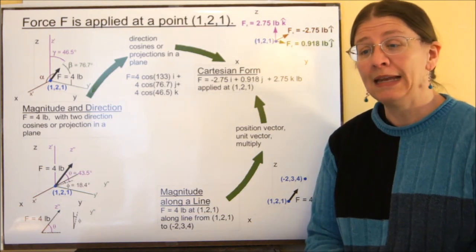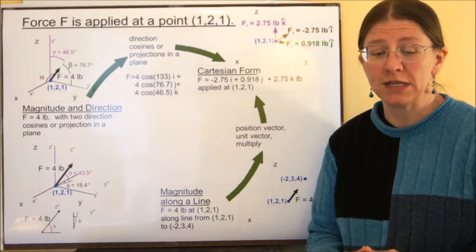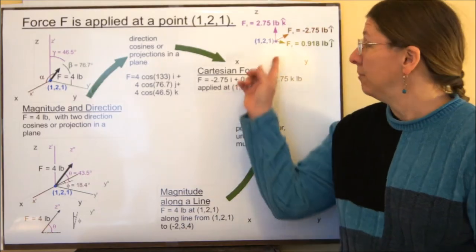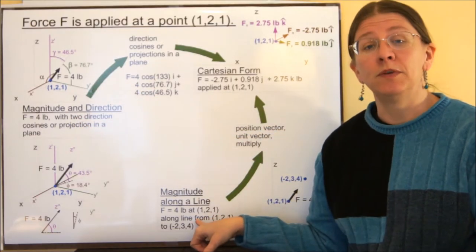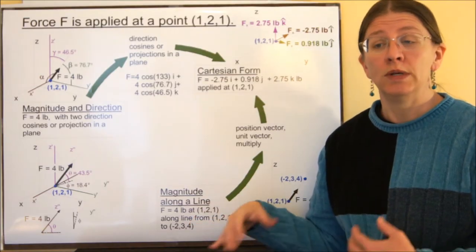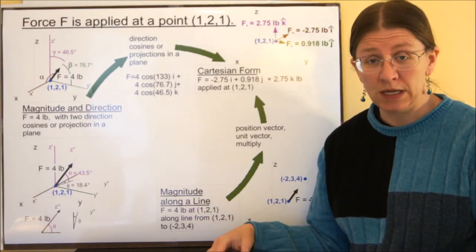We've seen before that any vector can be represented in any of three ways. It can be in Cartesian form, it can be in magnitude and direction, or it can be defined as a magnitude on one line. We did that in 2D. Now we're doing it in 3D.